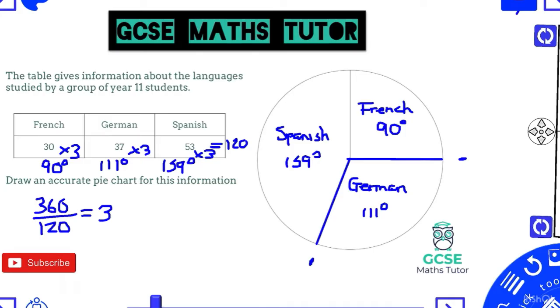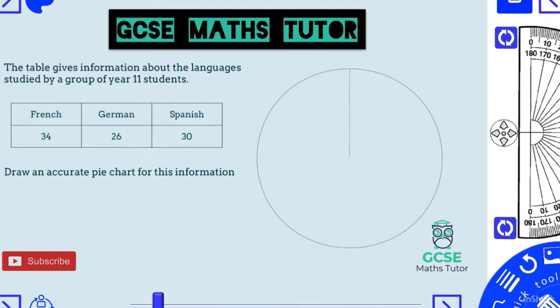Here's a question for you to have a go at. If you're comfortable drawing a pie chart and using a protractor, focus on getting the correct angles. If you have a compass and protractor, feel free to draw the full pie chart. Pause the video, have a go, and we'll go over the answer shortly.